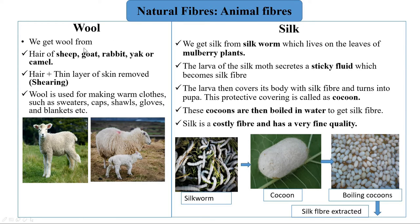Now let's study about animal fibers. There are two important animal fibers: wool and silk. We get wool from the hair of sheep, goat, rabbit, yak, or camel. The hair of these animals along with a thin layer of skin is removed to get wool fiber — this process is called shearing. Wool is used for making warm clothes such as sweaters, caps, shawls, gloves, and blankets.